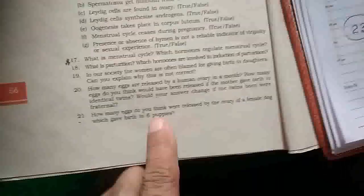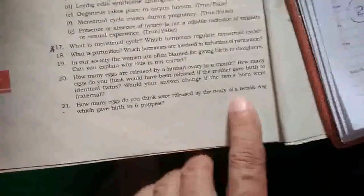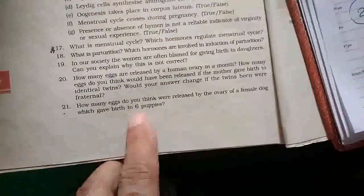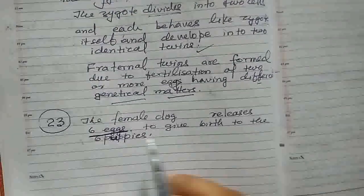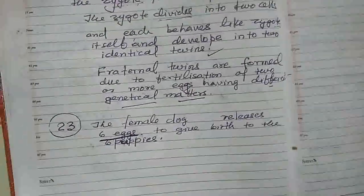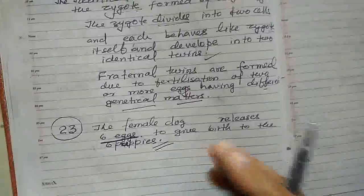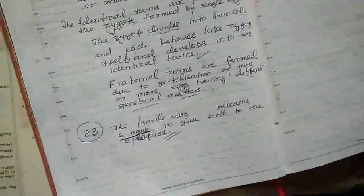How many eggs were released by the ovary of a female dog that gave birth to six puppies? Definitely, the female dog releases six eggs; each egg is fertilized by a sperm to give rise to one puppy, so six puppies are finally developed.